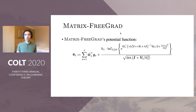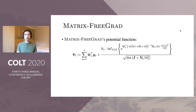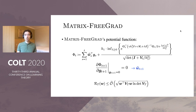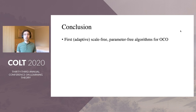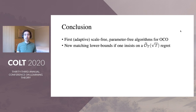For Matrix FreeGrad, the story is similar, except we use a different potential function. The outputs are derived the same way — we set the partial derivative of the potential function to zero and solve for W, which ensures the potential functions are decreasing in the length of the history and leads to the desired regret bound. In conclusion, we presented the first scale-free and parameter-free algorithms for online convex optimization, answering the 2016 open problem, and we also provide new lower bounds for algorithms that insist on a square root T regret bound. Thank you for listening.